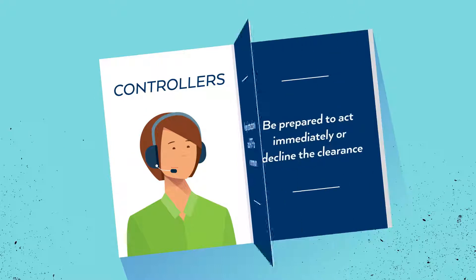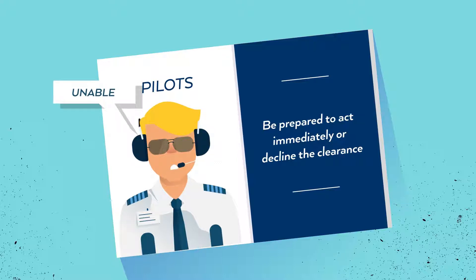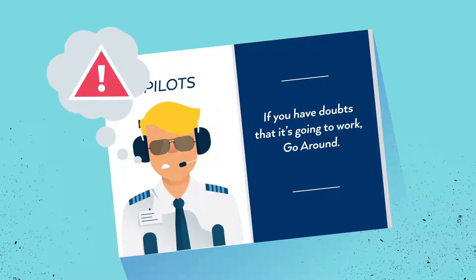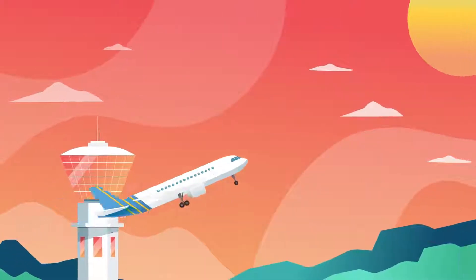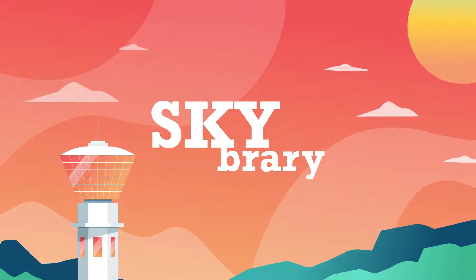Pilots: If the controller uses words like 'immediate,' be prepared to act immediately or decline the clearance using the word 'unable.' If on approach you have doubts that it's going to work, don't hesitate — go around. Learn more about low-level go-arounds on SKYbrary Step 3.